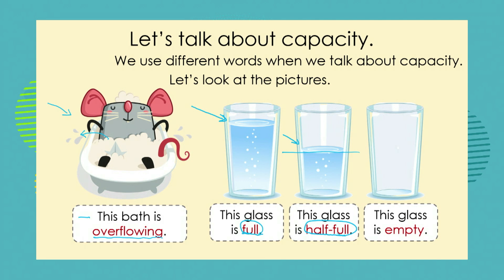And the last example is this glass over here — this glass is empty. Someone has drank all of their water for the day, so the glass is empty and you can see there is nothing in the glass. So the four important words we just learned about are overflowing, full, half full, and empty.